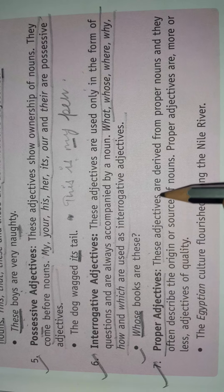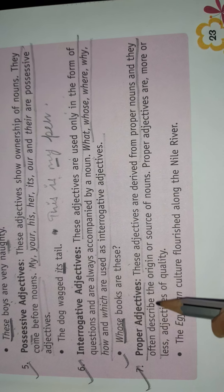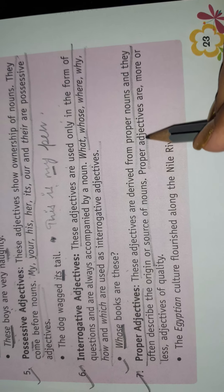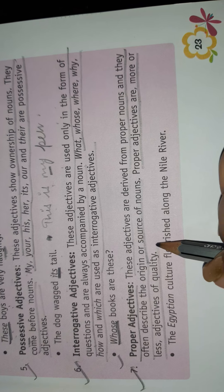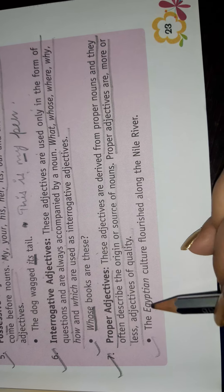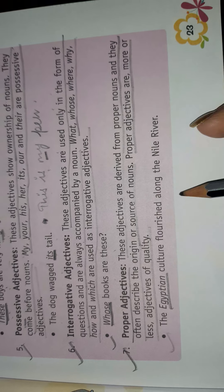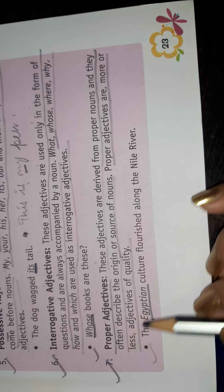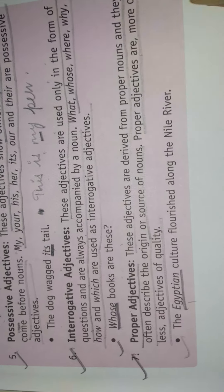Number seven: Proper Adjective. These adjectives are derived from proper nouns and often describe the origin or sort of noun. Proper adjectives are more or less adjectives of quality. For example: 'The Egyptian culture flourished along the Nile River' — here 'Egyptian' is a proper adjective.